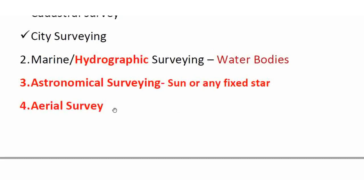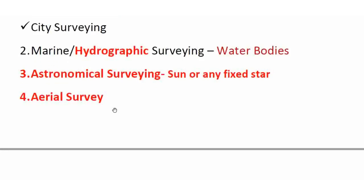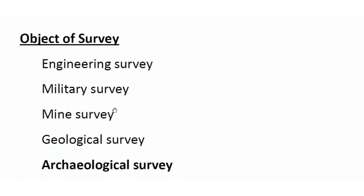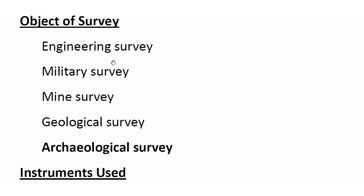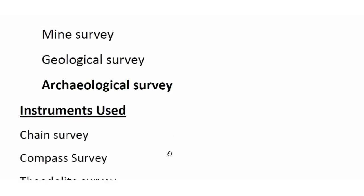Aerial surveying is used to collect flood and cyclone data from affected areas that cannot be surveyed on the ground — done from air, flight, or aeroplane. Classification by objective includes engineering surveying, military surveying, mine surveying, geological surveying, and archaeological surveying. Engineering surveying covers all engineering works — buildings, roads, railways, dam construction. Military surveying covers routes and positions of strategic importance. Mine surveying covers mineral wealth such as gold, copper, and coal. Geological surveying determines different rock layers. Archaeological surveying involves unearthing relics of antiquity.